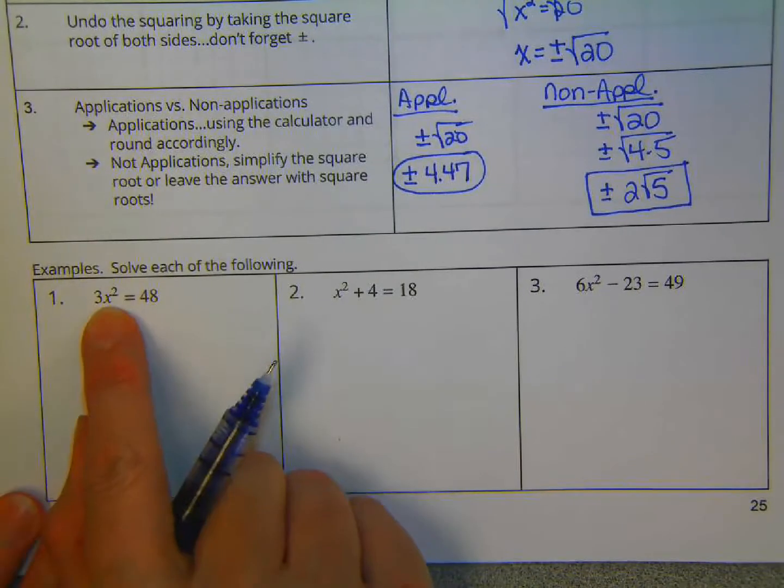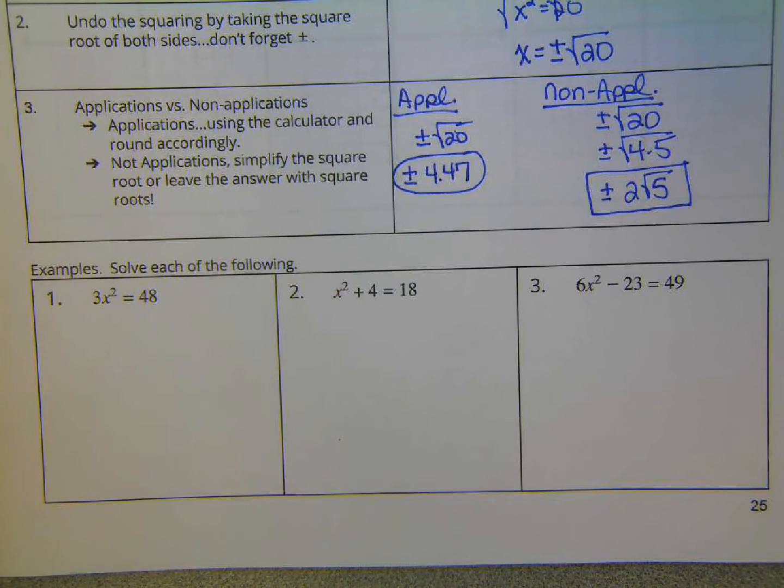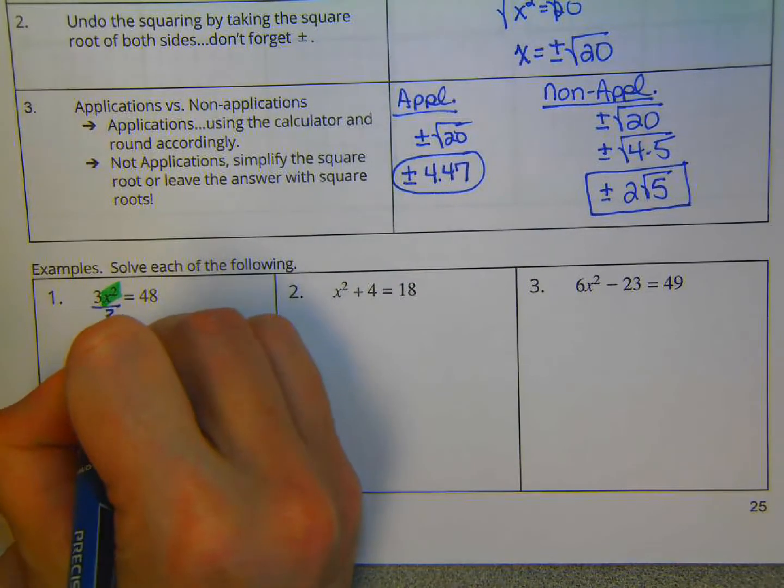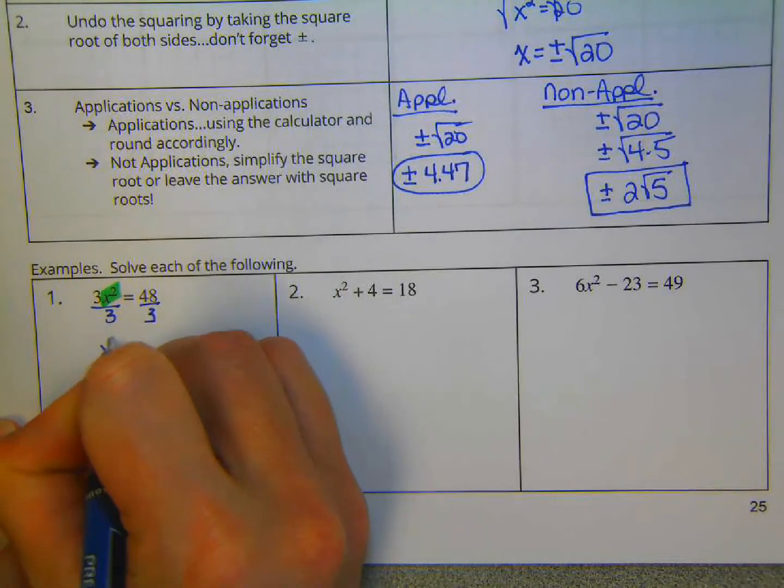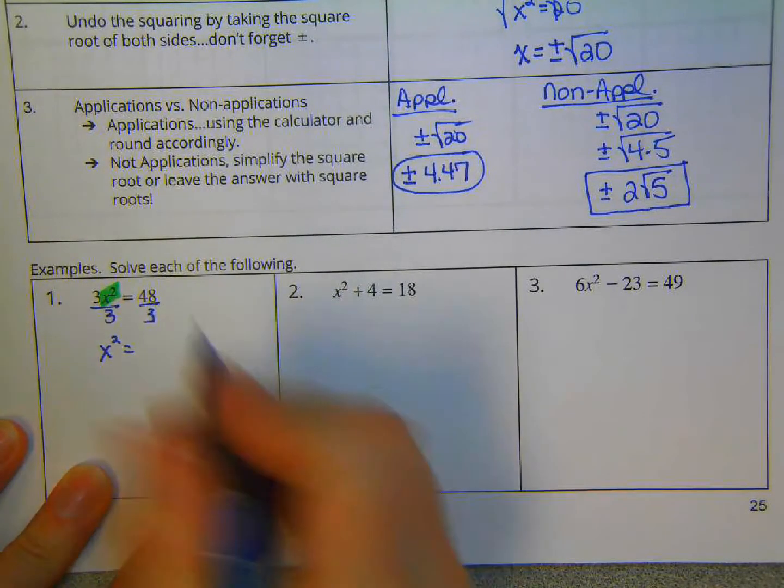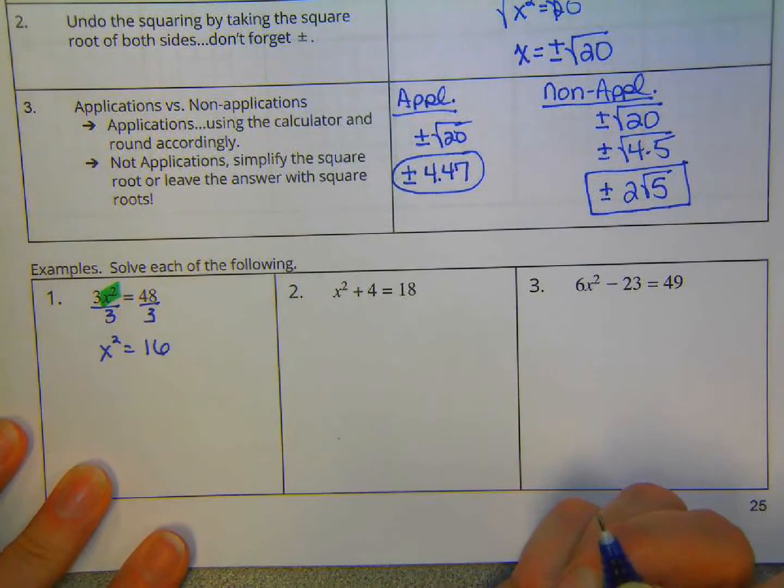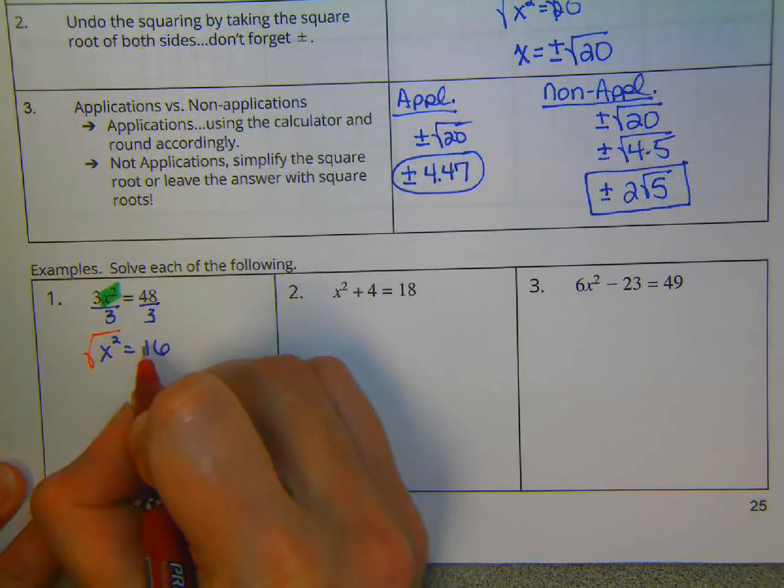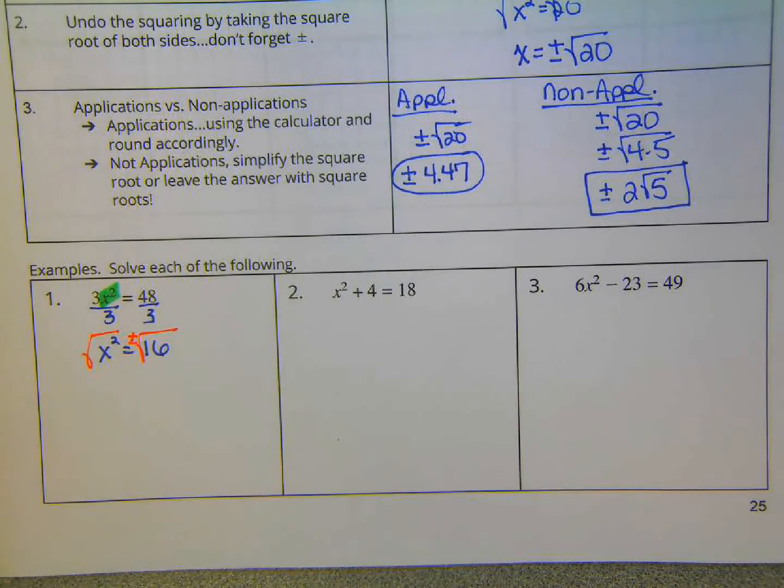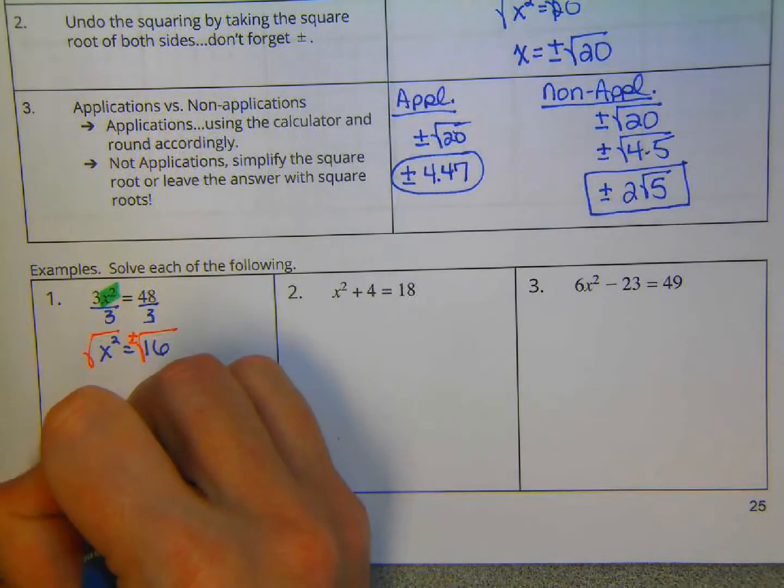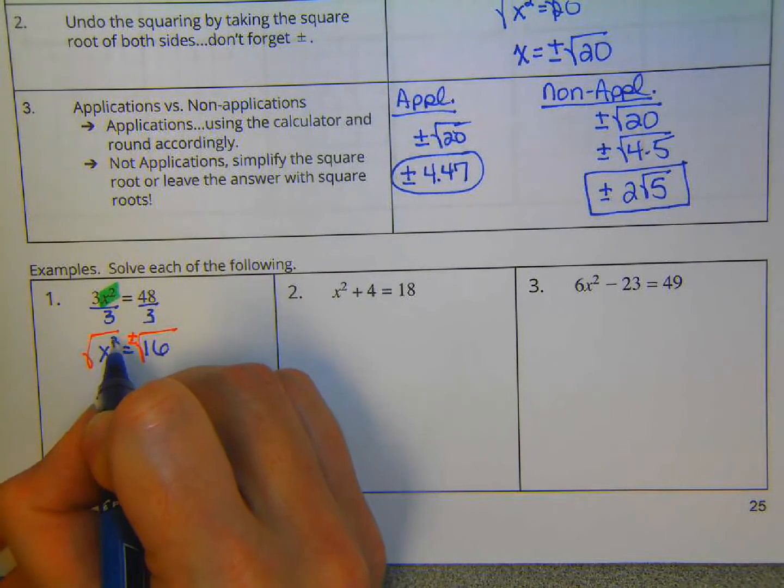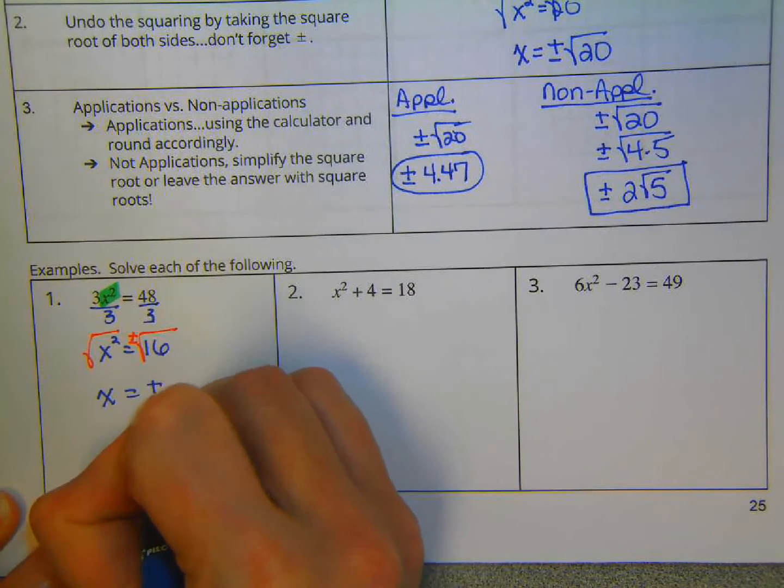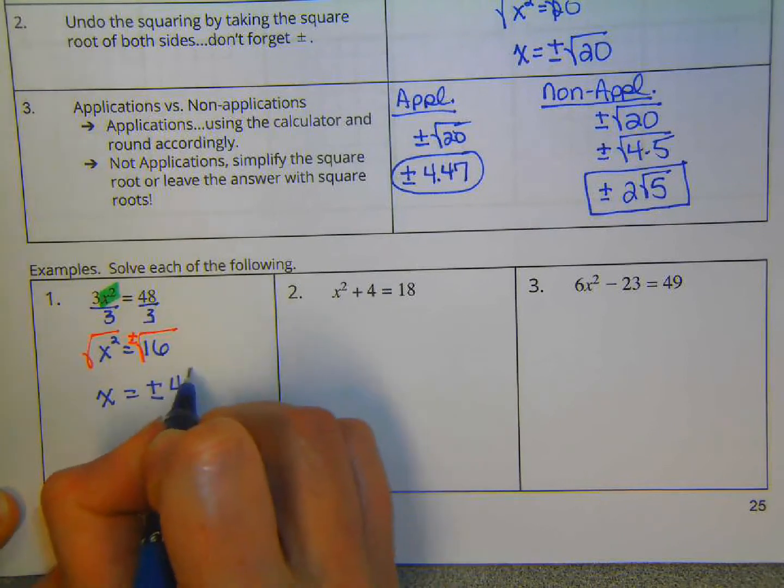So for this right here, we have x squared. Right there. We need to get that by itself first. So we're going to divide both sides by 3. And x squared gives us 48 divided by 3 is 16. Now that we have this like this, we're going to square root both sides. But don't forget you want the positive and negative version of that. So that would be x. The squaring and the square root cancel. The squaring and the square root undo each other. They are inverses. Plus or minus. Well, the square root of 16 is 4. So we're done.